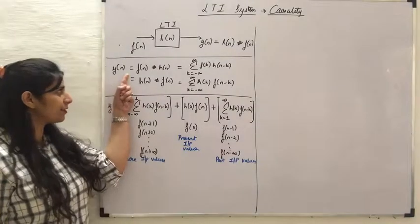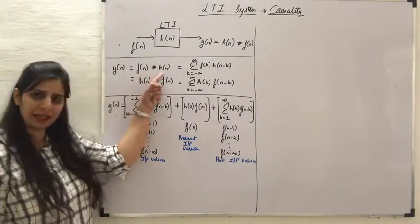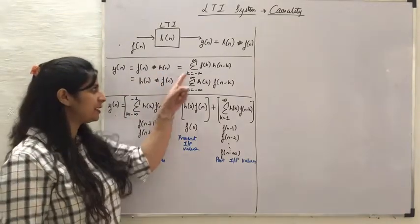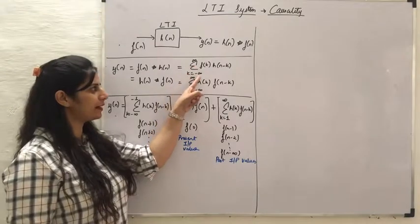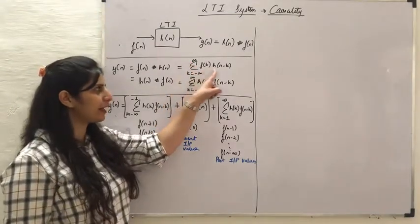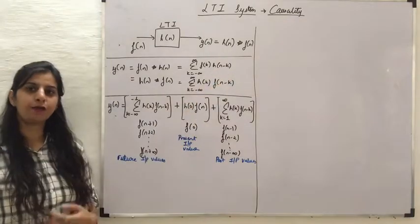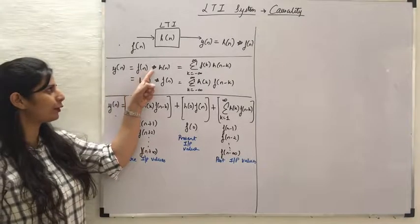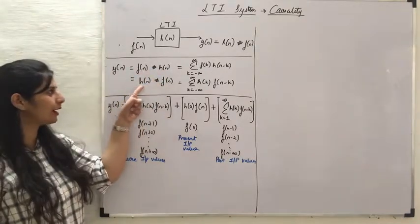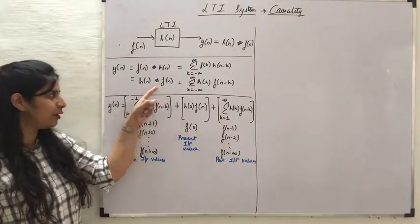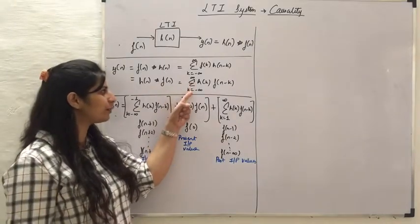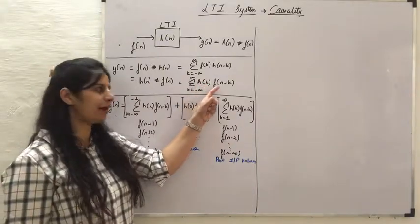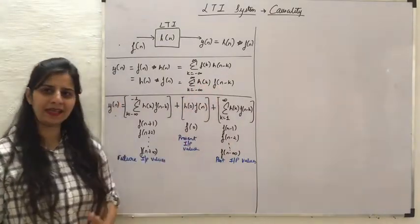Y(N) is given as F(N) convolved with H(N), and the formula for convolution of a discrete time signal is: summation from K equals minus infinity to infinity of F(K) times H(N minus K). From the commutative property of convolution, F(N)*H(N) equals H(N)*F(N), so it can also be written as summation of H(K) times F(N minus K).